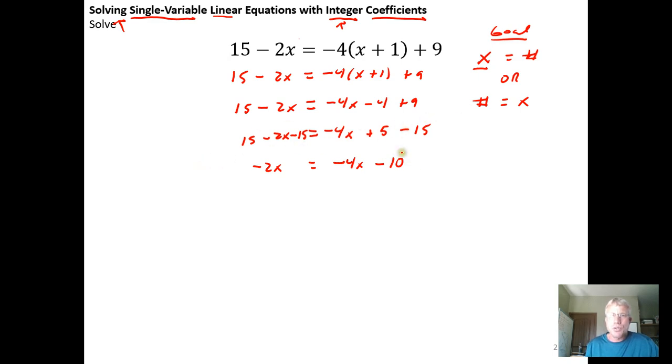And then I'm trying to get the x's over on the left-hand side. So here I have a negative 4x. So I'm going to add 4x to both sides because negative 4x plus 4x is 0. 0 minus 10 is a negative 10. And I get negative 2x plus 4x is 2x.